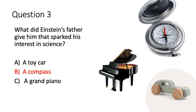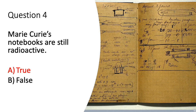Question three: Einstein's father gave him a compass that sparked his interest in science — a compass just like the one you can see on your screen. Question four: Curie's notebooks are still radioactive — true or false? The answer is true. In fact, they are so radioactive that they are too dangerous to touch and are stored in lead boxes for safekeeping. They will probably take around 1,500 years to become safe again.